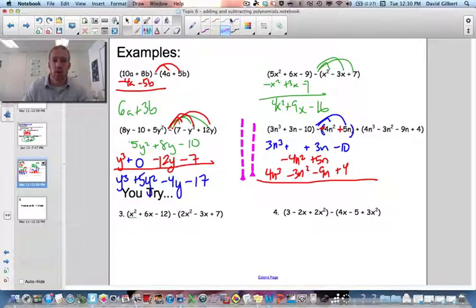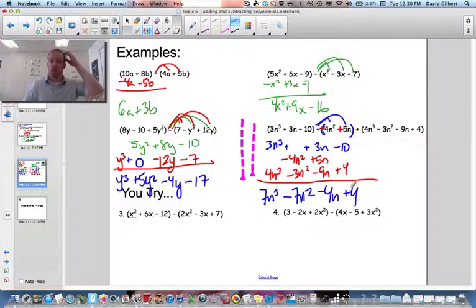There we go. So we get 7n³, a negative 7n², minus 4n, and a plus 4. And that's the final result there.